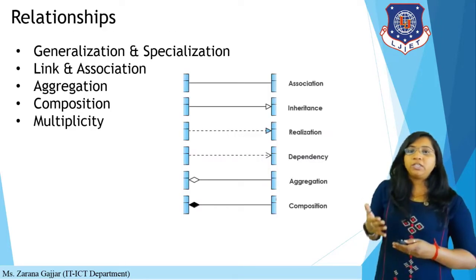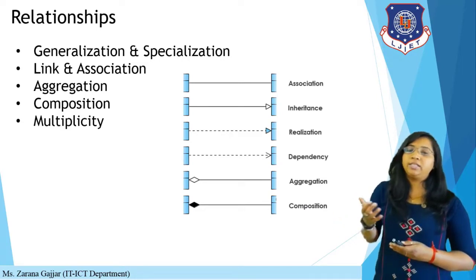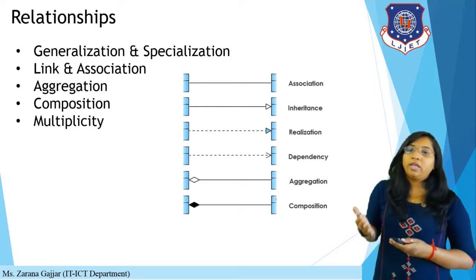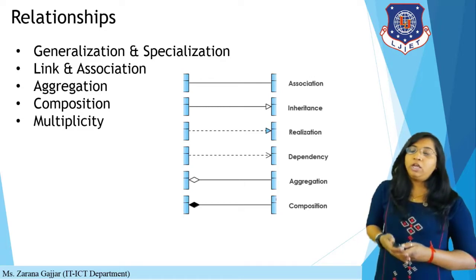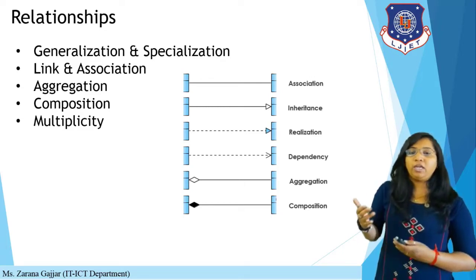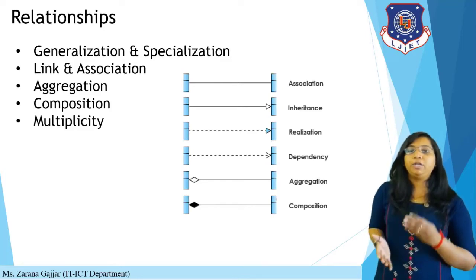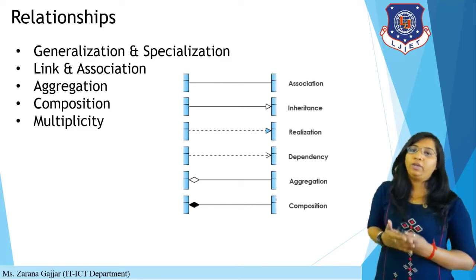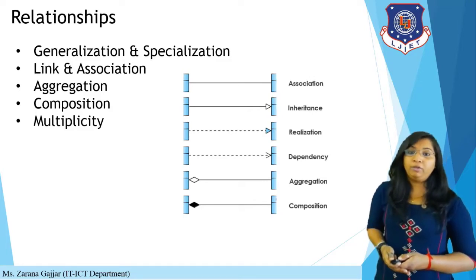A relationship between classes can be any of the following: generalization and specialization, link and association, aggregation, composition, and multiplicity. You can use any of these relationships to define a relation between two various classes. Let's discuss each relationship briefly.